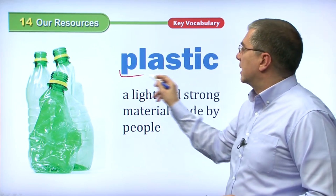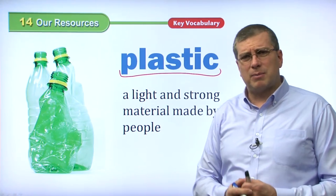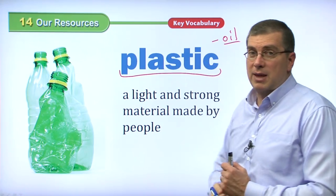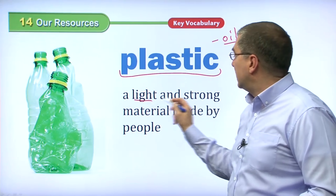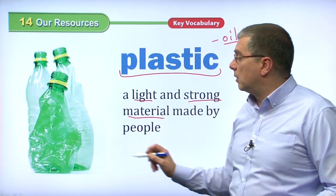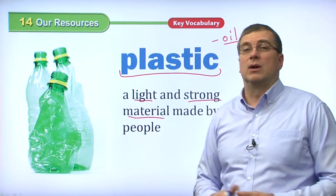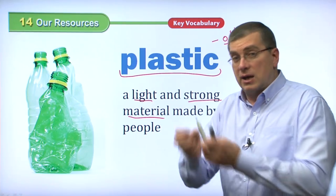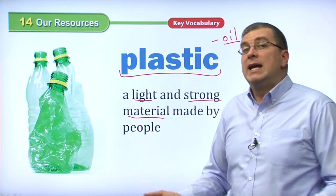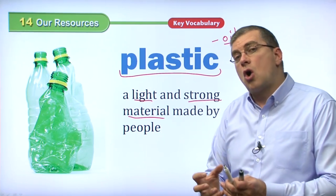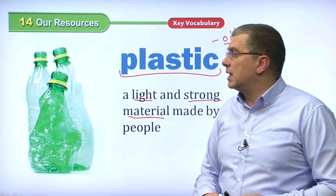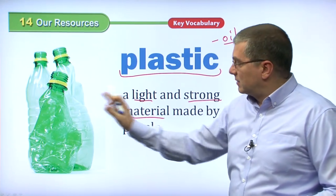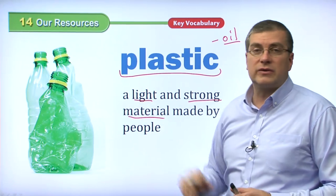We also have plastic. Plastic is made from oil — we use oil to make plastic. Plastic is a light and strong material made by people. Plastic is very useful; it's easier to transport than glass because if we drop it, it won't break. It's lighter than metal but can be very strong like metal too. So plastic is a very important invention. It is made from oil through a certain type of process.